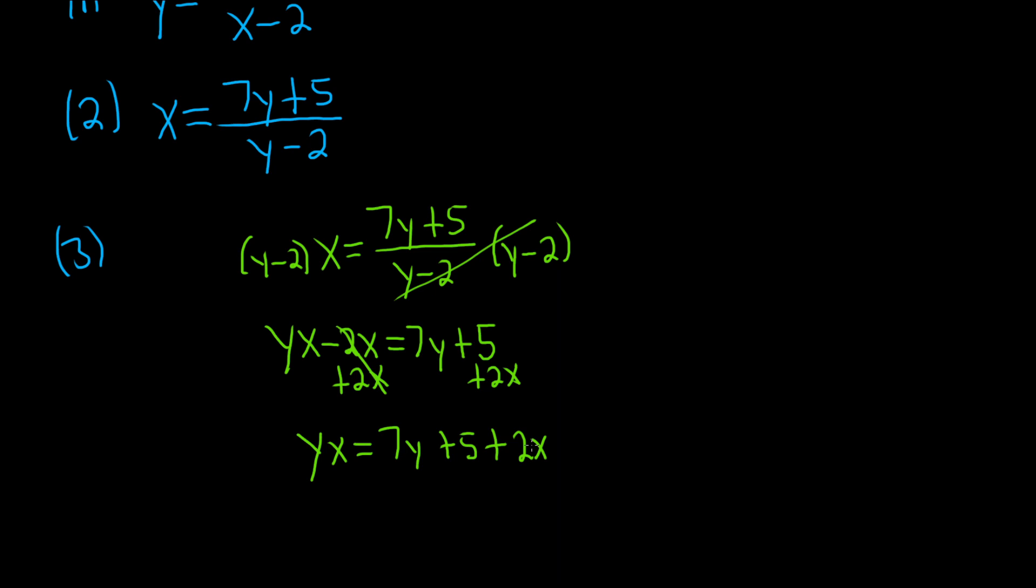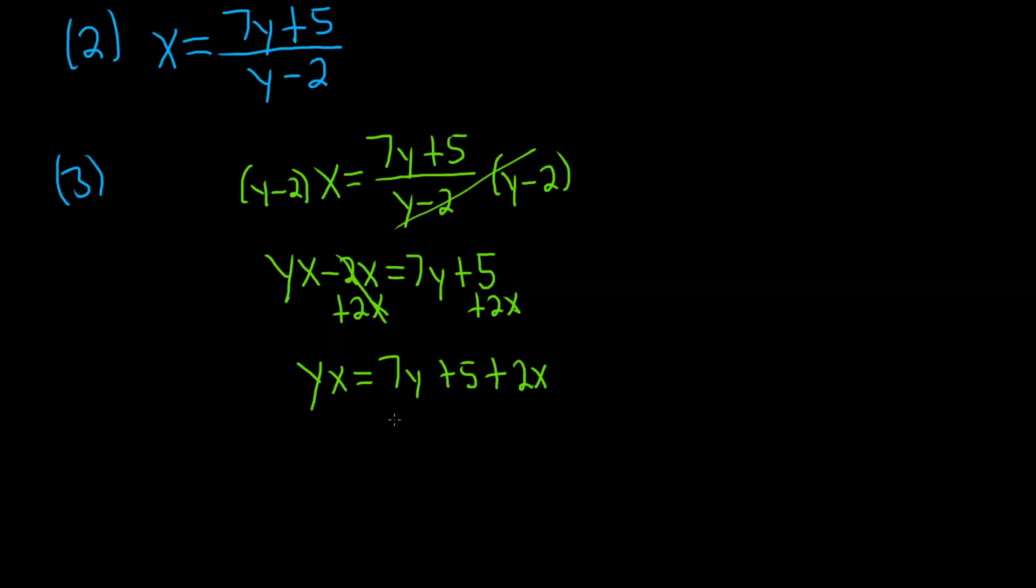And then now we'll subtract the 7y. So minus 7y minus 7y. That leaves us with yx minus 7y equals 5 plus 2x.